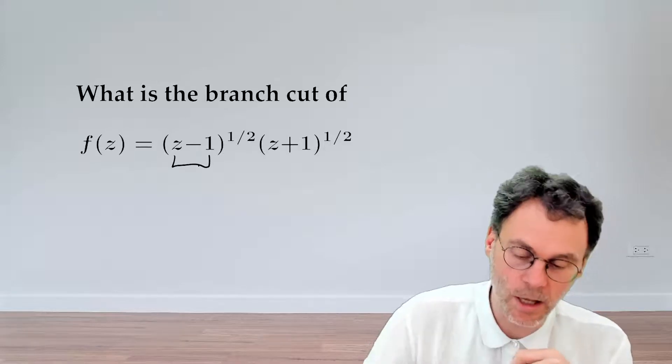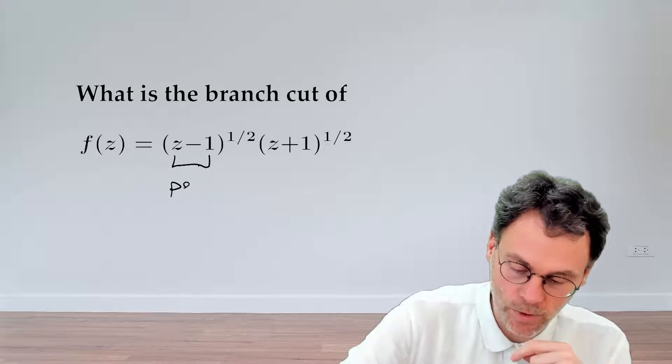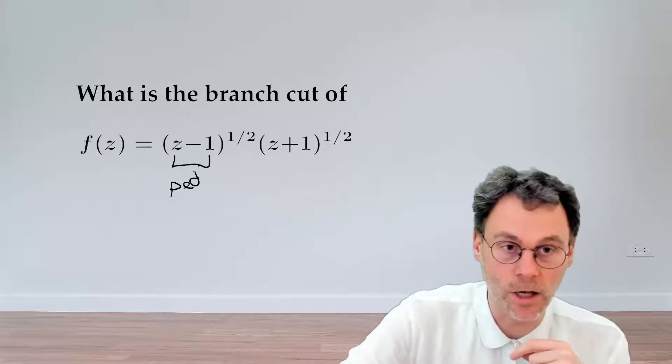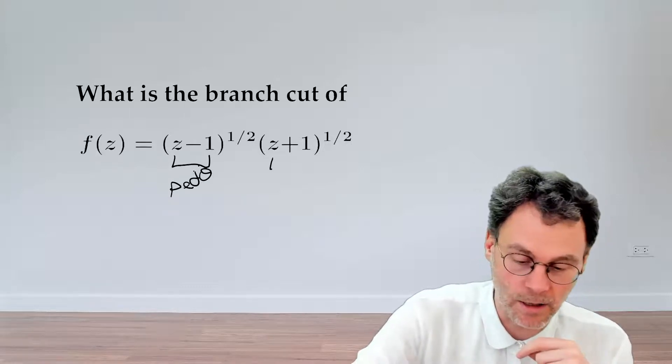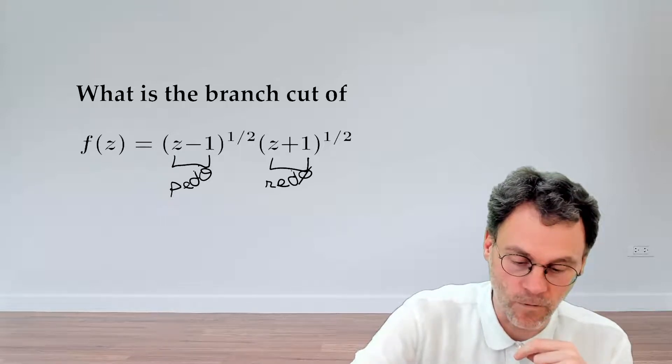The first argument is z minus 1, so we're going to write that in polar form. z minus 1 is going to be rho exponential j theta. And then the second one, z plus 1, is going to be r exponential j phi.